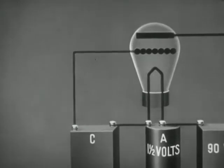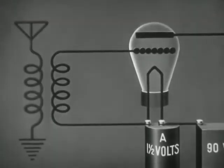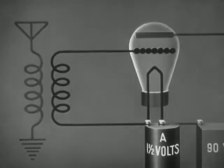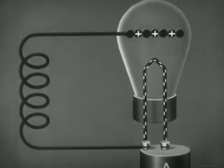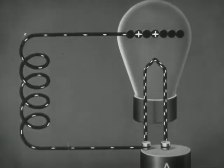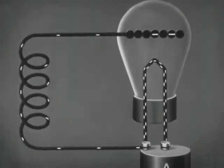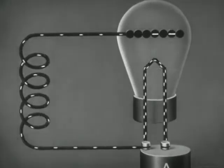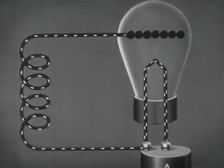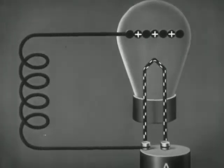Now let us connect the grid and the filament to the secondary coil of a transformer, whose primary is connected to an aerial. We know that the current in the coil is a high-frequency alternating current. When electrons flow off the grid, the grid becomes more positive with respect to the filament. When the current reverses and electrons flow onto the grid, the grid becomes more negative. Thus, the charge on the grid will change at the same frequency as the radio frequency current.